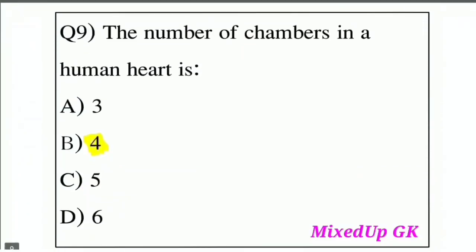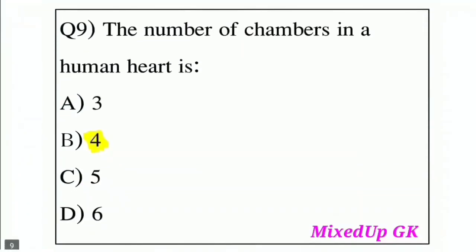Question 9: The number of chambers in a human heart is — Option A: 3, Option B: 4, Option C: 5, Option D: 6. The correct answer is 4. There are 4 chambers in the human heart. This is an easy question.